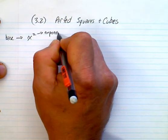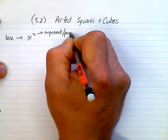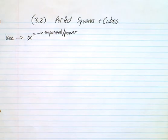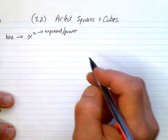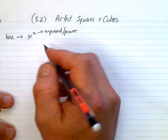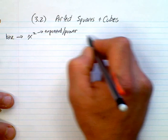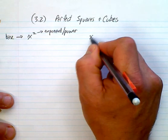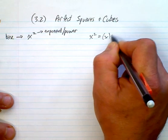We also can call it a power. That's something that hopefully you have seen in the past. The way this works is that x squared means x times x.